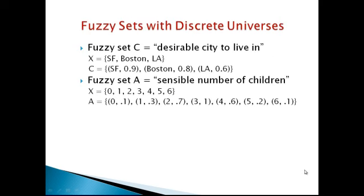Another example of a fuzzy set with a discrete universe is fuzzy set C, representing a desirable city to live in. The universal set X equals {SF, Boston, LA}. C assigns membership values: SF gets 0.9, Boston gets 0.8, and LA gets 0.6.